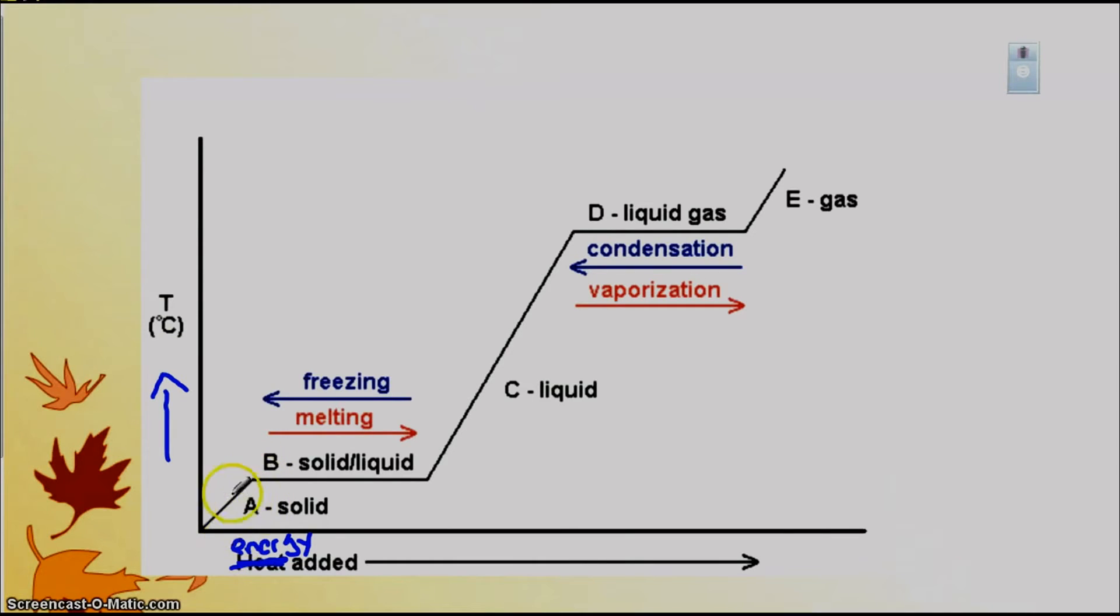So what we have here, we have matter starting off as a solid. When energy and temperature increase, that solid meets the freezing and melting point. That's right here. So it could be a solid, it could be a liquid at this point. For water, we know that it's 32 degrees. So as more energy and as more temperature is added, it reaches the liquid state of matter.